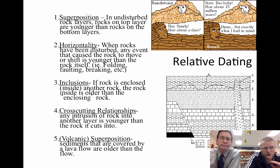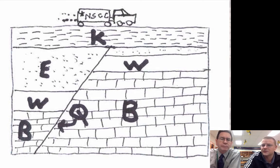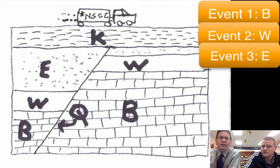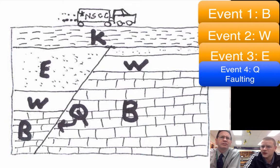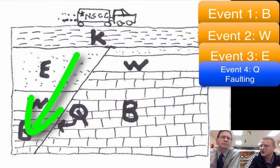We're going to use these five rules to look at a couple scenarios and try to determine what event happened first. Looking at this rock strata, we see about five different events that possibly happened here. The lowest level seems to be B. On top of that is W and E. Then it looks like Q might be the fourth event — B went down, then W, then E. Then there was a fault, an earthquake, something that broke those rock layers, shifting W and E down or shifting the right side of the picture up.